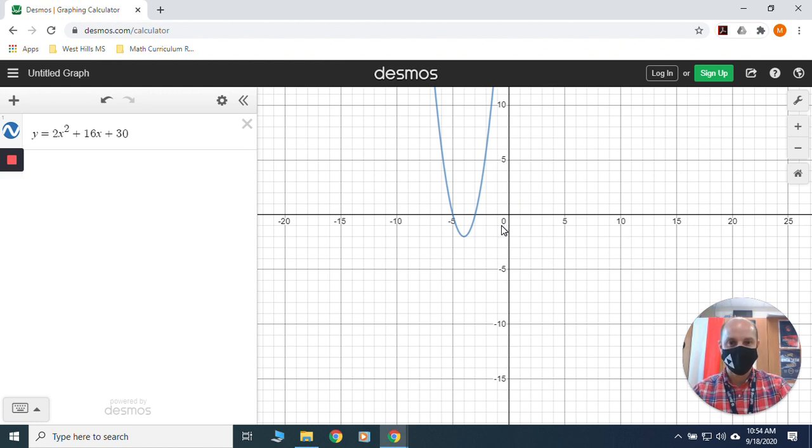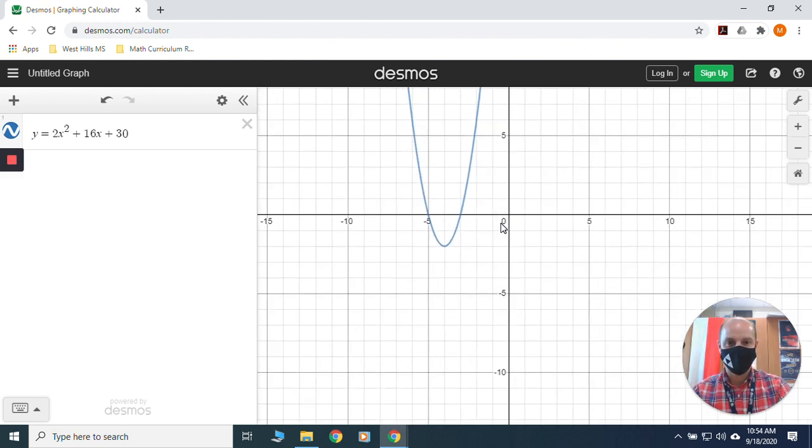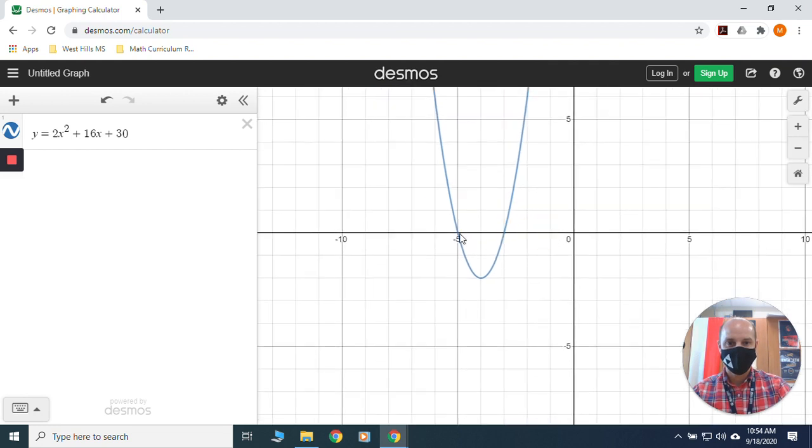You need to be able to identify the x-intercepts. I'm going to zoom in a little bit. The x-intercepts are where it crosses the x-axis. If you come over close to it and tap on it a couple times, it'll show up.